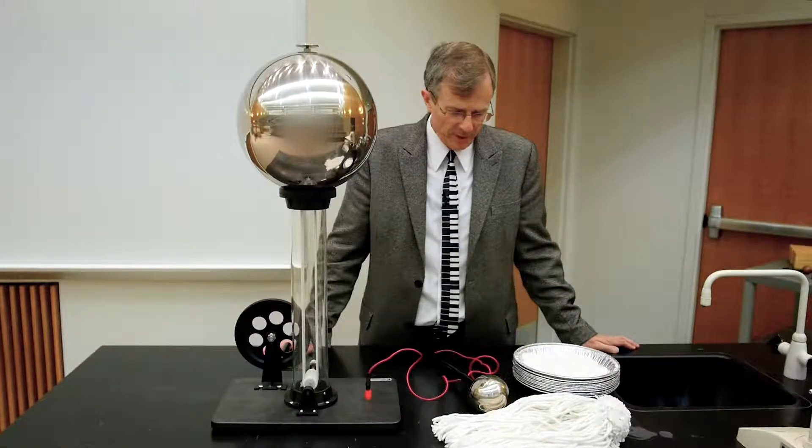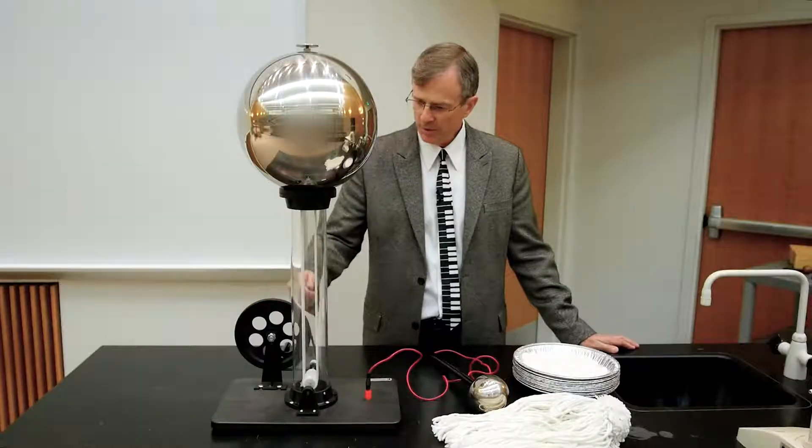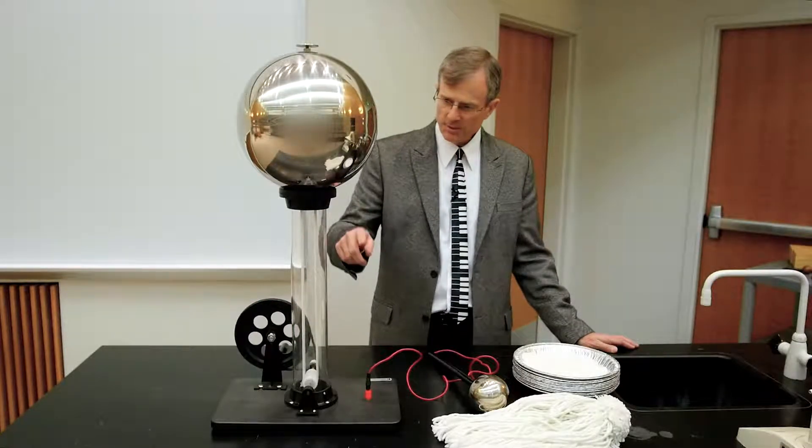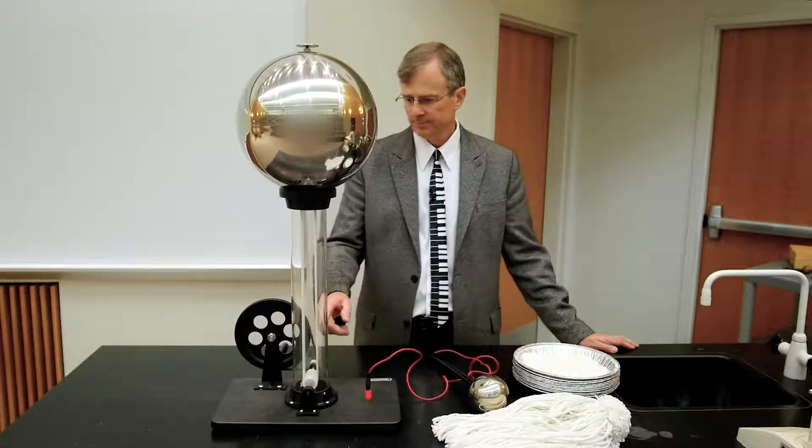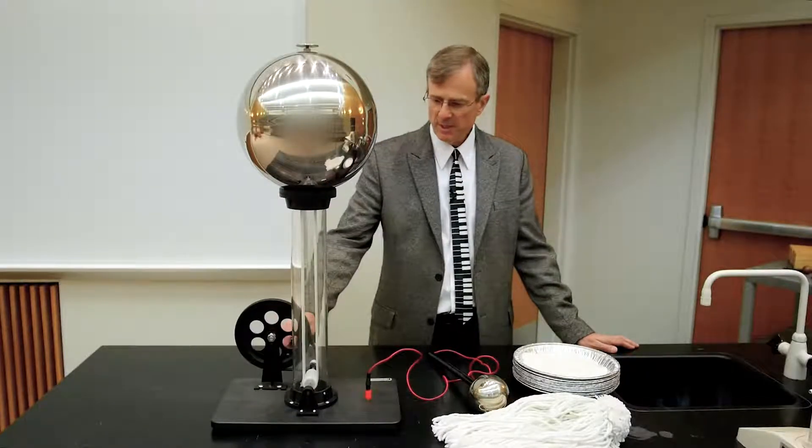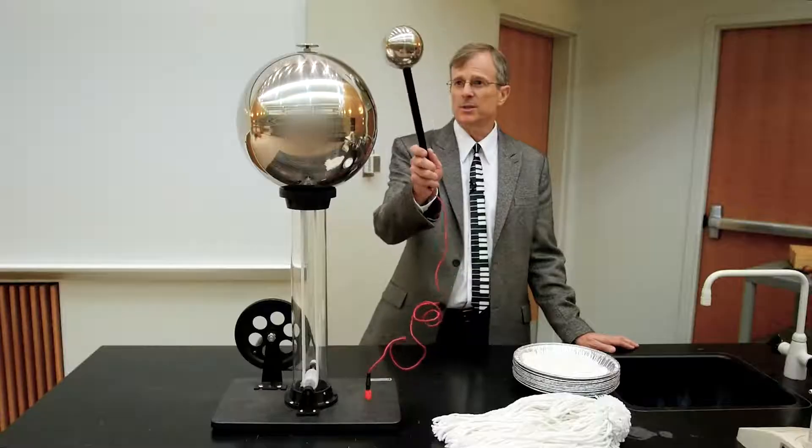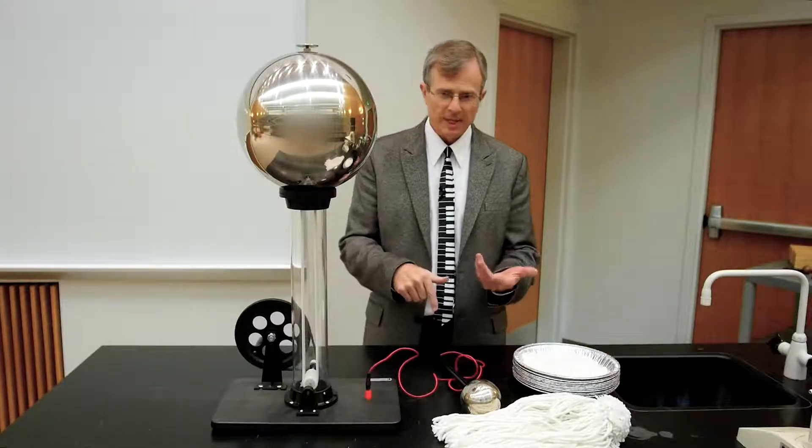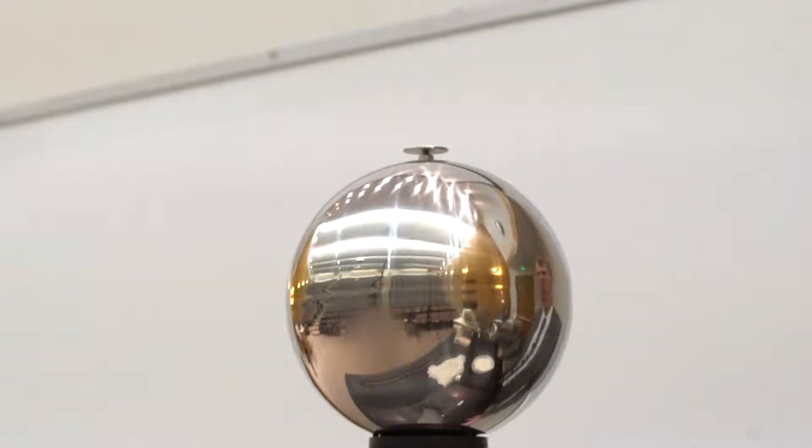First we'll turn out the lights. I'll turn this, basically how you generate charge is turning this wheel. This band spins and rubs off charge, and then you can get sparks here. So let me demonstrate first with the lights out that we're really getting electricity here, and then we'll have some more fun.